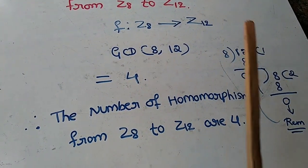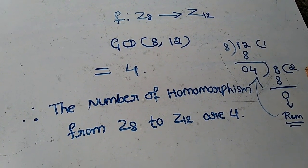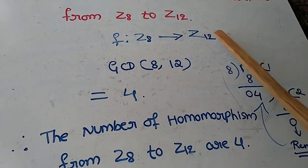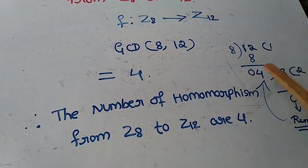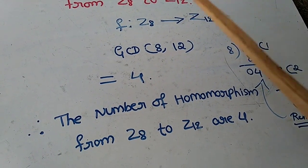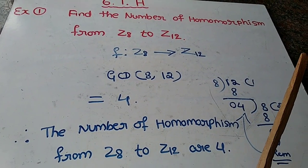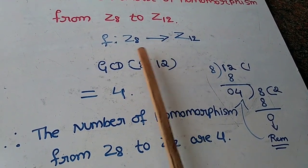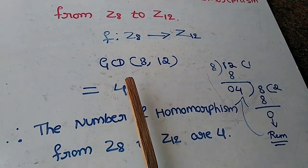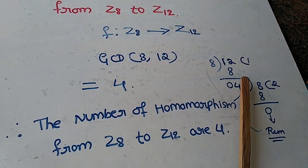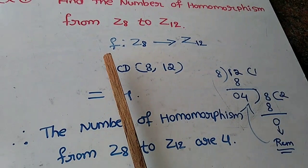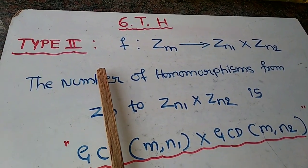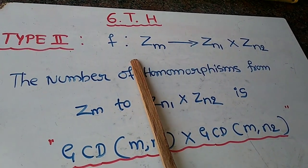This division method is very helpful and easy. In every examination they firmly ask this question. Just remember: write the function, then take GCD using the division method. Let us now move on to the second type of homomorphism.